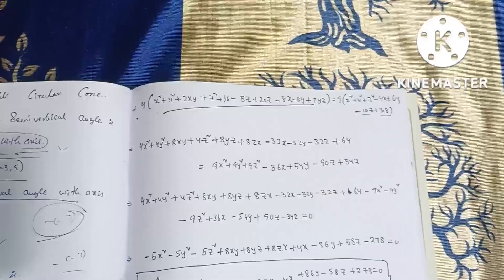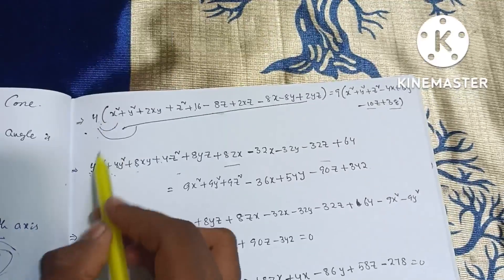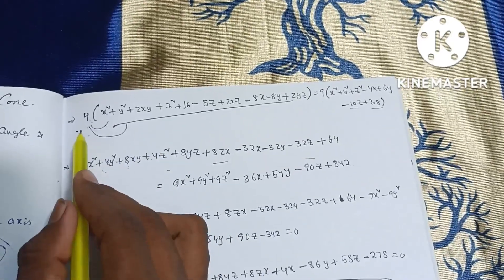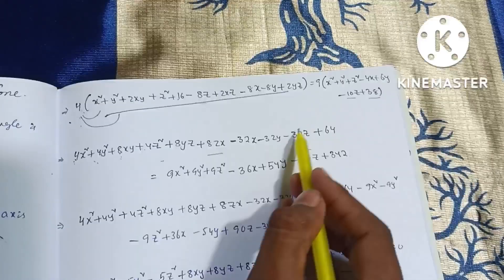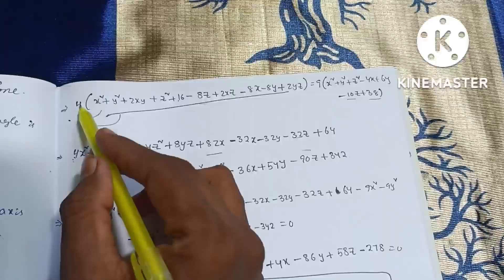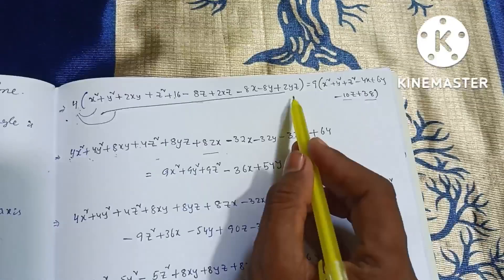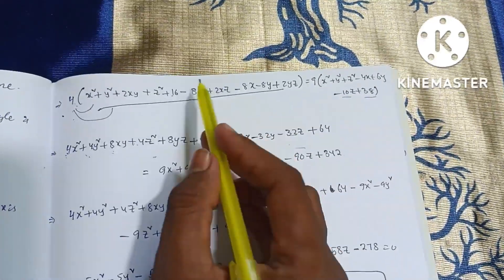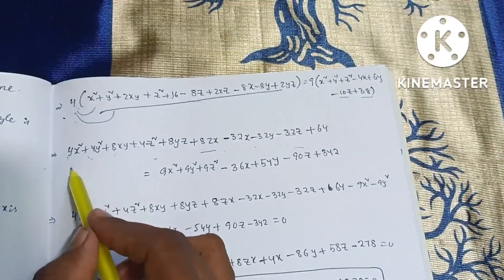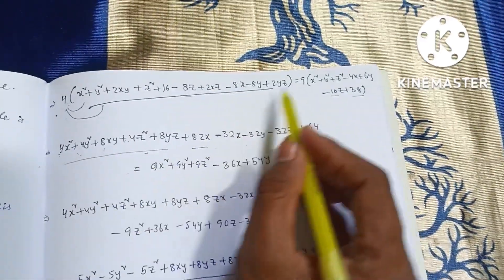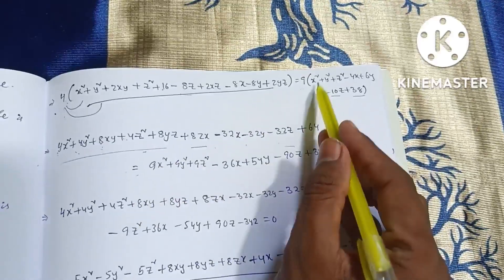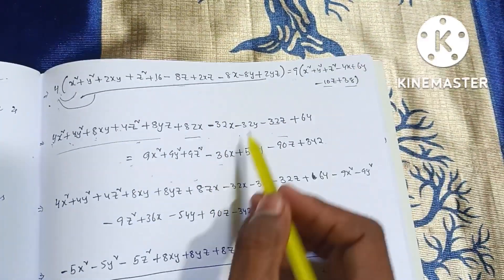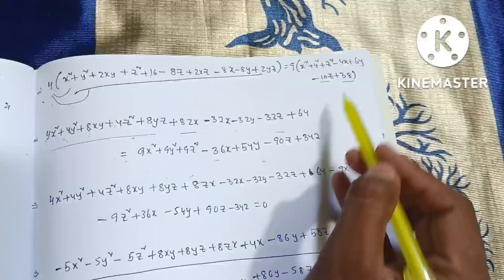Problem slowly. 4 into x square, 4x square. 4 into y square, 4y square. 4 into 2xy, 8xy. 4 into z square, 4z square. So 4 into 16, 64. 4 into minus 8z, minus 32z. 4 into 2xz, 8zx. 4 into minus 8x, minus 32x. 4 into minus 8y, minus 32y. Is equal to 9 into x square, 9x square. 9 into y square, 9y square. 9 into z square, 9z square. 9 into minus 4x, minus 36x. 9 into 6y, 54y. 9 into minus 10, minus 90z. 9 into 38, plus 342.